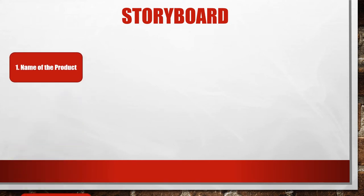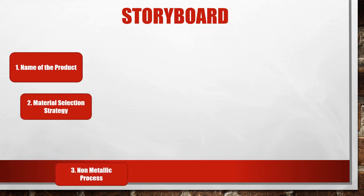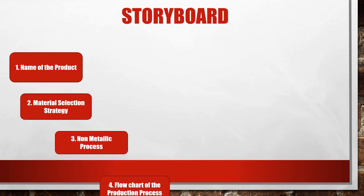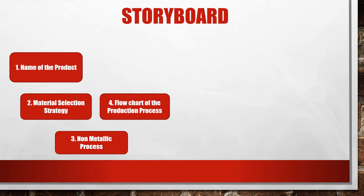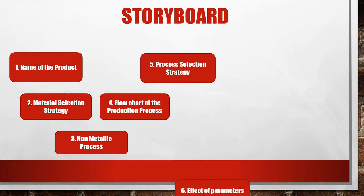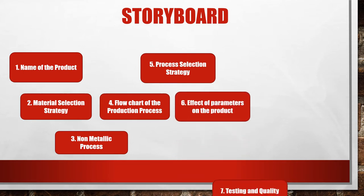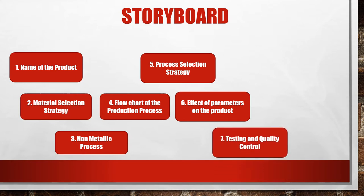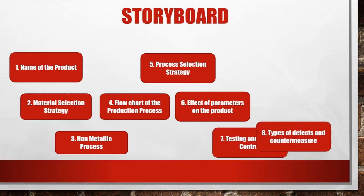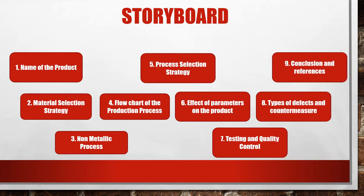The storyboard of this video is as follows. One: Name of the product. Two: Material selection strategy. Three: Non-metallic process. Four: Flow chart of the production process. Five: Develop a process selection strategy. Six: Effective parameters on the performance of product. Seven: Testing and quality control. Eight: Types of defects and countermeasure. And lastly, nine: Conclusion and references.